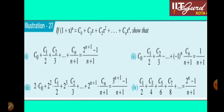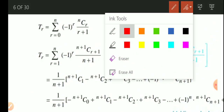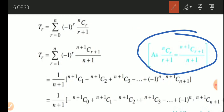Question 2 is c0 − c1/2 + c2/3 + ... with alternating signs. Due to this alternating negative sign, we include (−1)^r in the general term tr = (−1)^r × NCR/(r+1). We again apply NCR/(r+1) = N+1 C R+1/(n+1), and the (r+1) terms cancel.